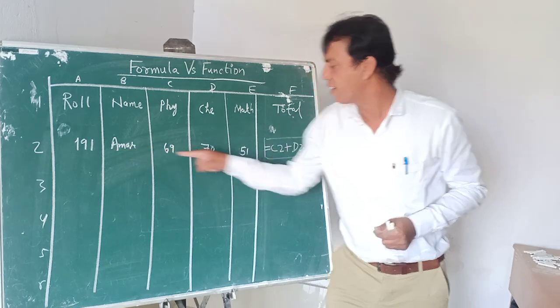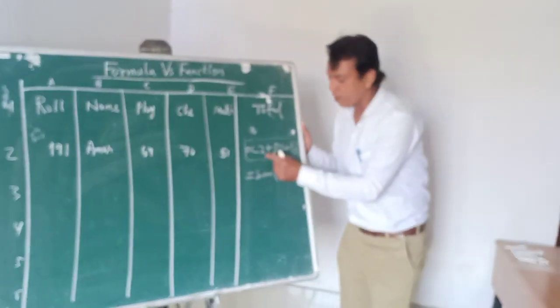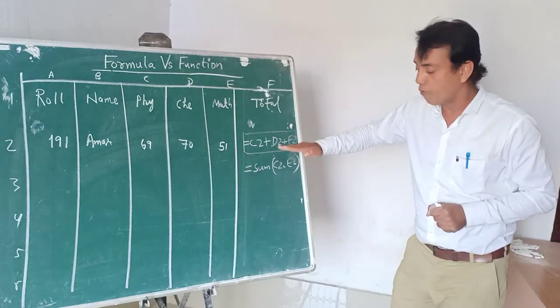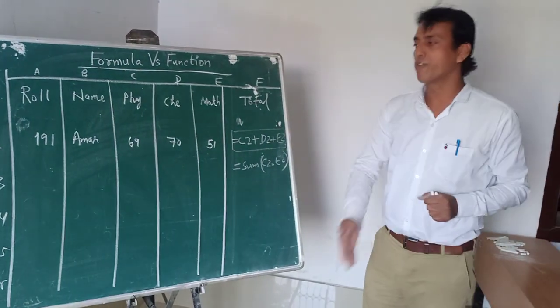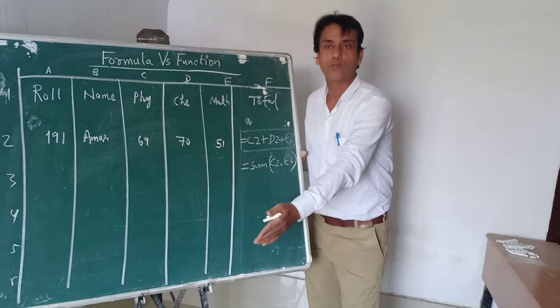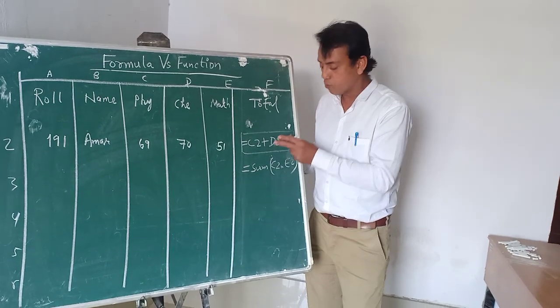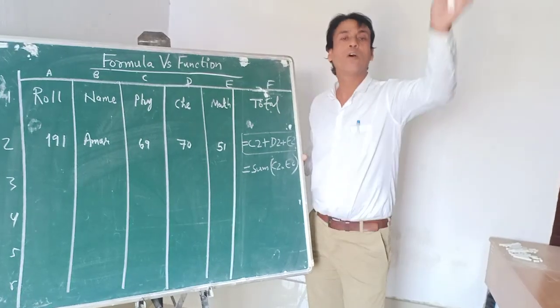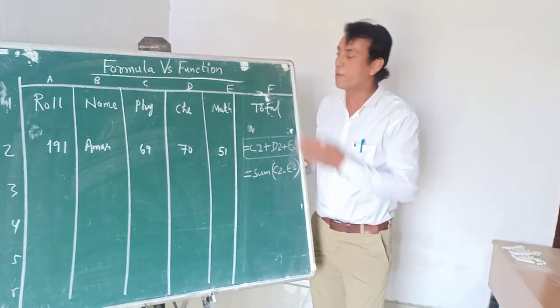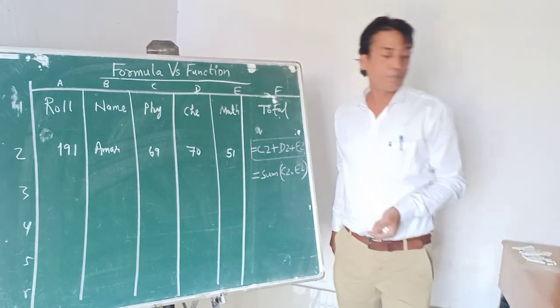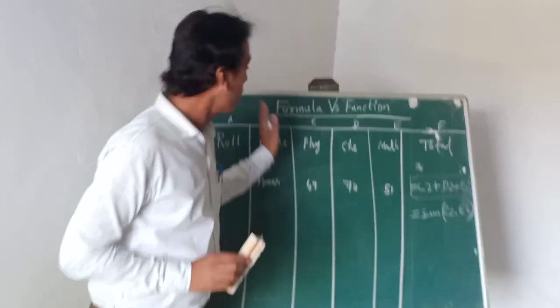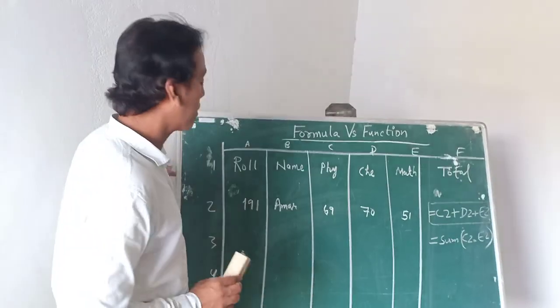Here we can see how the formula or function simplifies our task. If we have only one record, you put the formula here or the function here. You can copy this formula or function for all consecutive rows. Suppose we have 10,000 students, you do not need to write this formula for 10,000 students. You just write for one and apply it to all 10,000, and the total will be counted. There is a very powerful use of formula as well as function.